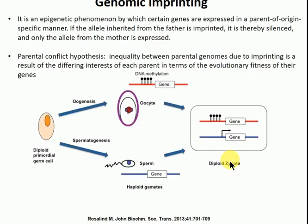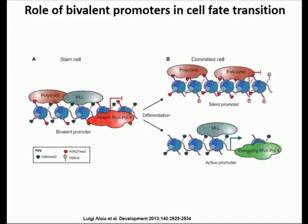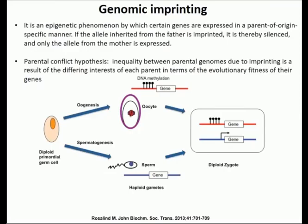So during differentiation, if a bivalent region ends up with H3K27 trimethylation, that gene is not needed for the committed cell — it becomes suppressed. If it ends up with H3K4 trimethylation, the gene becomes expressed and is needed. These are known as bivalent domains: they have both modifications and are poised regions that can go either way — they can either stay balanced or resolve into one of the two different states, creating an immediate response to a developmental signal.